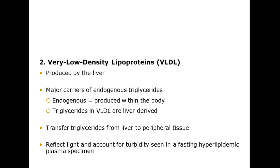The next type is very low density lipoproteins, or VLDL. These are produced by the liver and carry endogenous triglycerides — the ones produced within the body, not from your diet. They transfer triglycerides from the liver to peripheral tissues, and they reflect light and account for turbidity seen in a fasting hyperlipidemic plasma specimen.